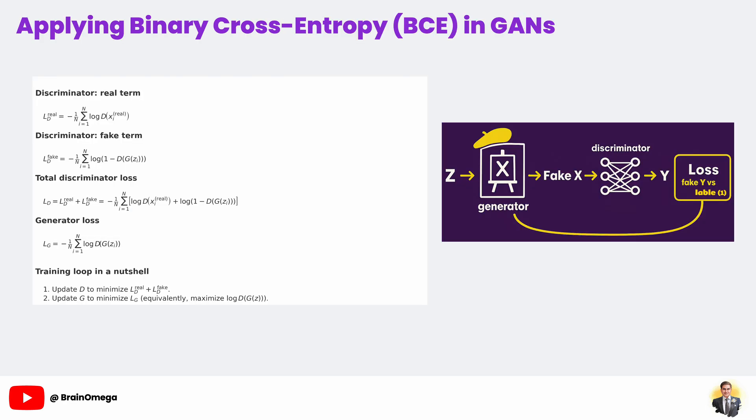First, let's examine the discriminator. Its job is to distinguish real data from fake data produced by the generator. We assign label 1 to real samples and 0 to generated samples. The discriminator's loss combines two parts. The first part measures how well it assigns high scores to real examples — it is the average negative logarithm of the discriminator's output on real data. The second part measures how well it assigns low scores to fakes — it is the average negative logarithm of 1 minus the discriminator's output on generated samples. Adding these two parts gives the total discriminator loss, which the network minimizes to assign high probabilities to real inputs and low probabilities to fakes.